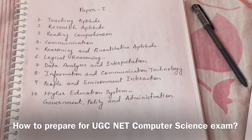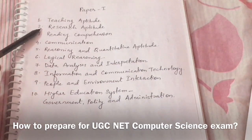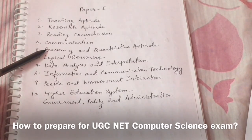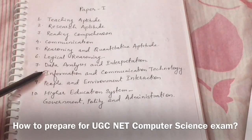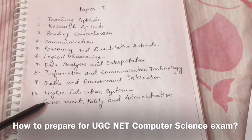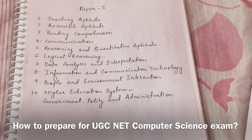For Paper 1, you have to study: teaching aptitude, research aptitude, reading comprehension, communication, reasoning and quantitative aptitude, logical reasoning, data analysis and interpretation, information and communication technology, people and environment interaction, and the higher education system — which includes government, polity, and administration. Don't neglect any topic.